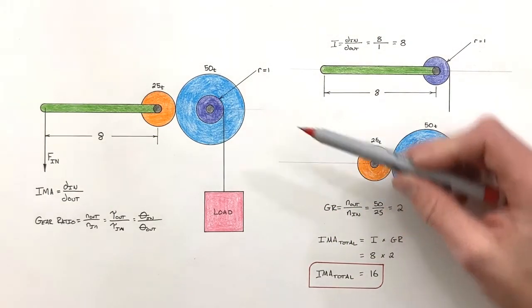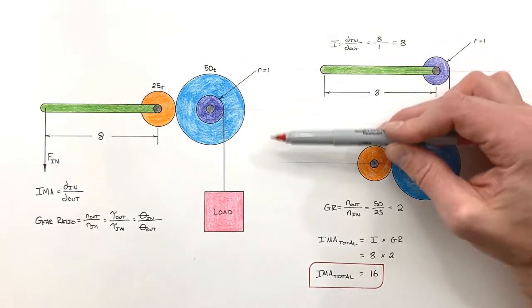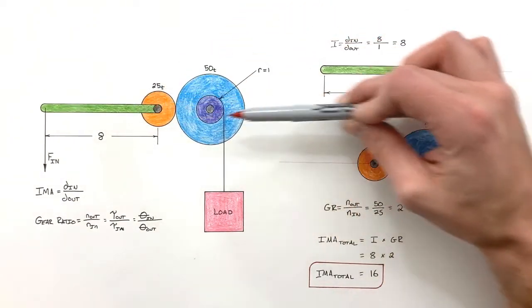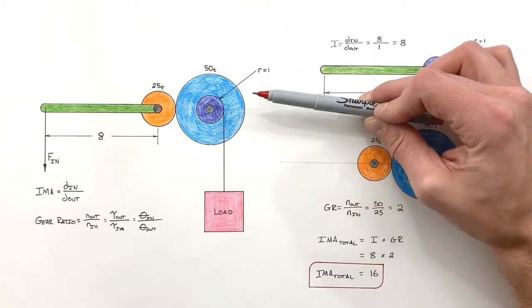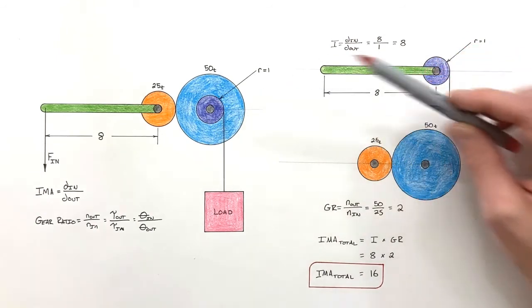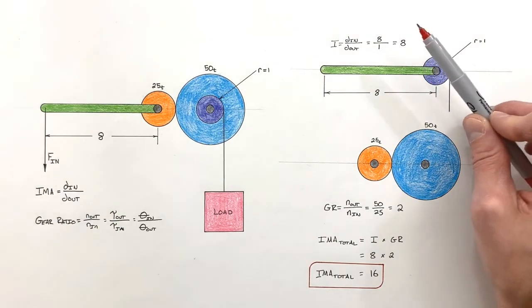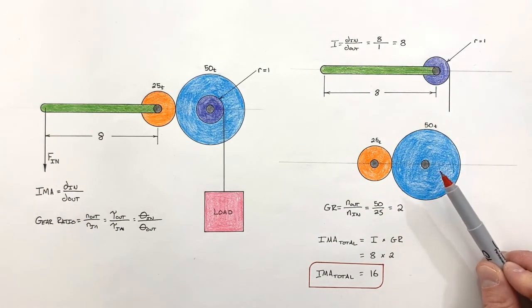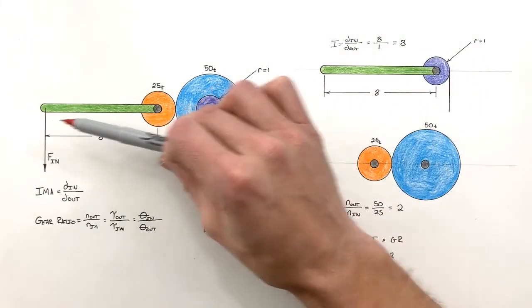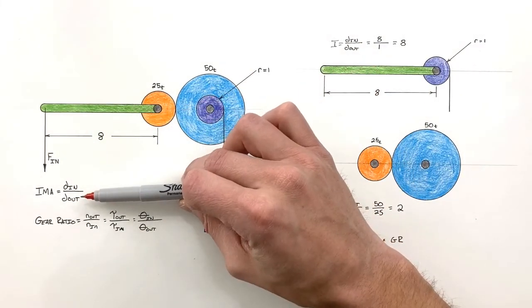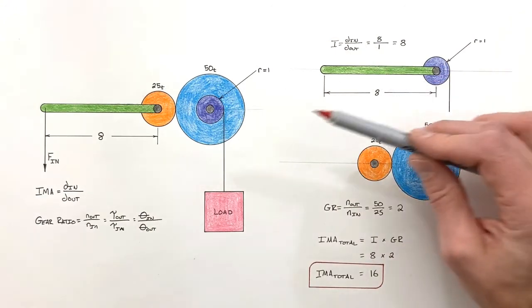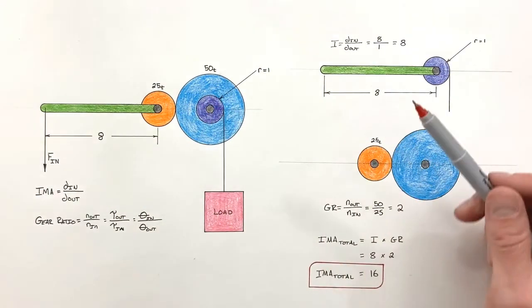So it's important to realize when we have a compound machine where there's simple machines combined with gears, what we need to do is separate out the simple machines from the gears and then work out the IMA and gear ratio of those machines separately. We have to do that because simple machines are all based on linear terms and gears are based on rotational terms and the two terms don't really combine.